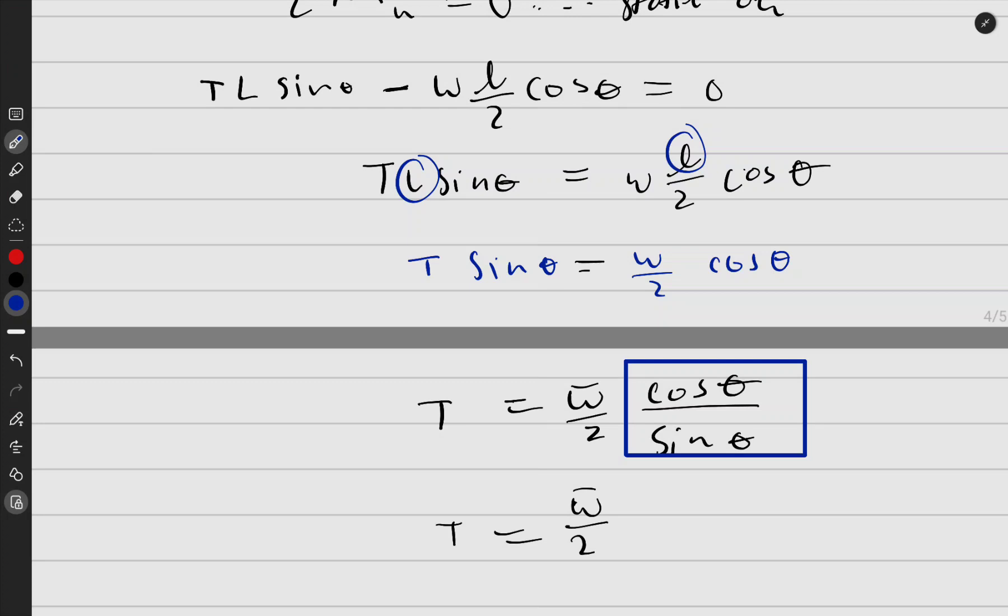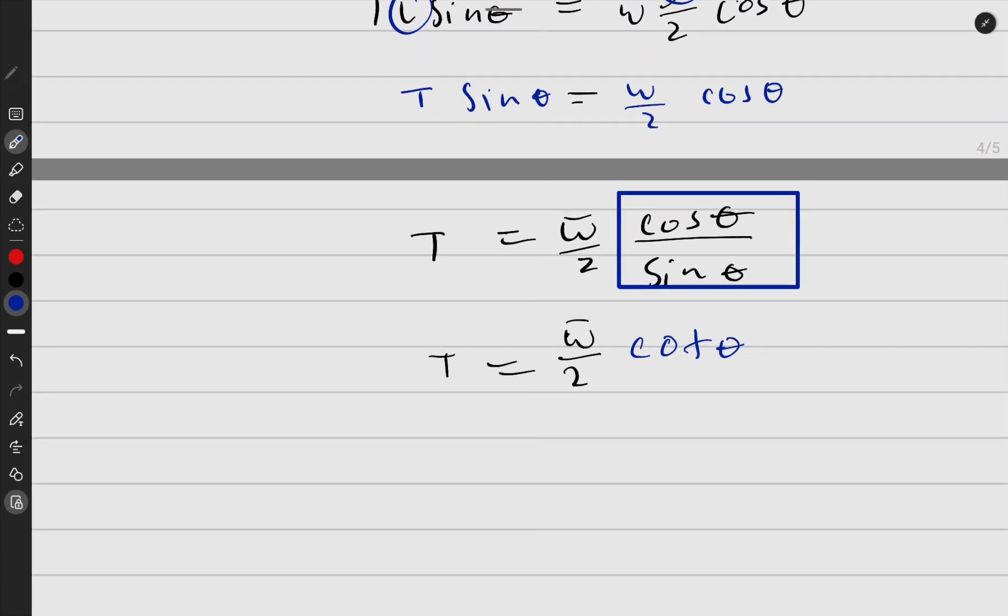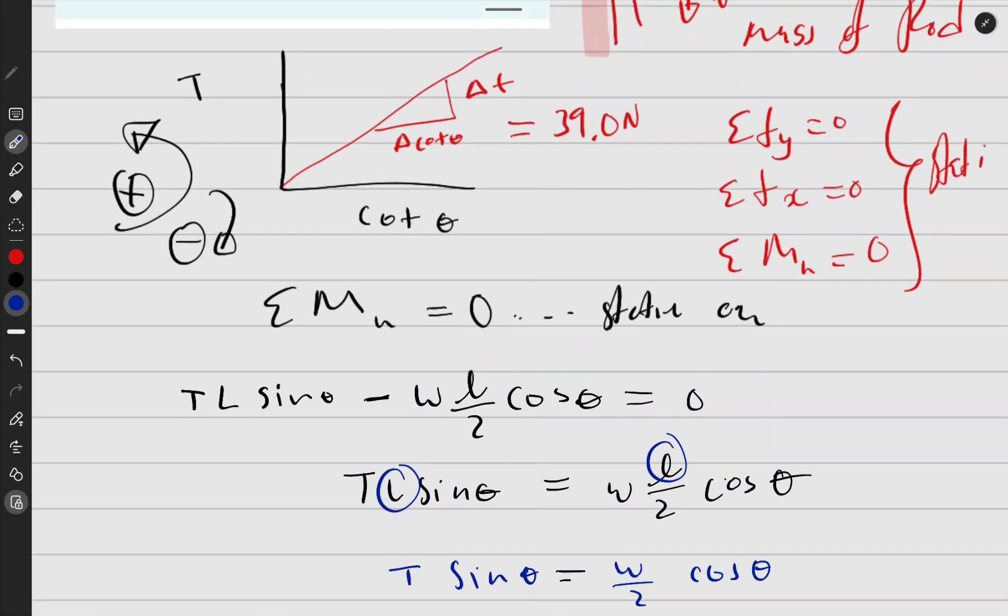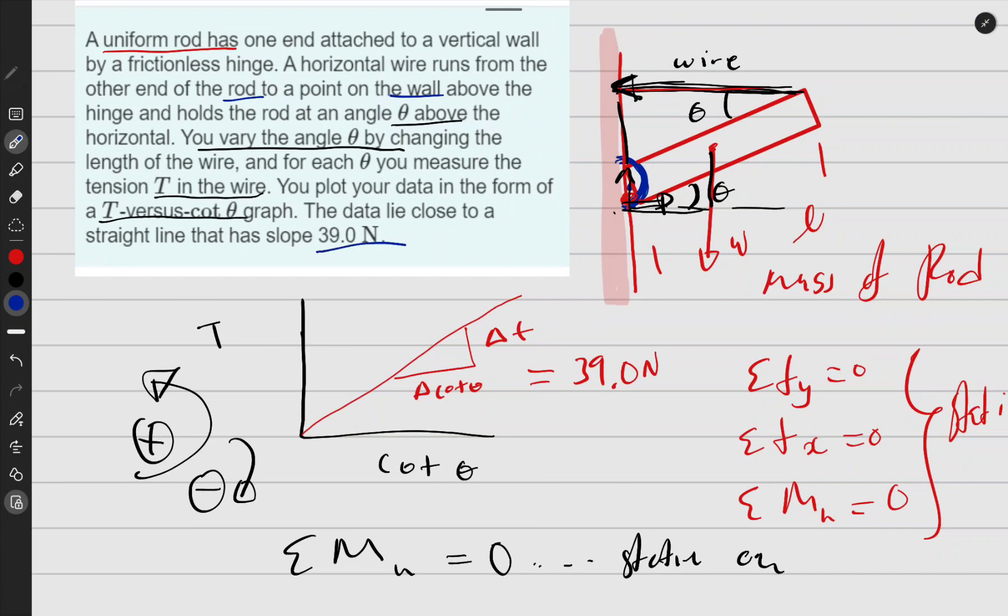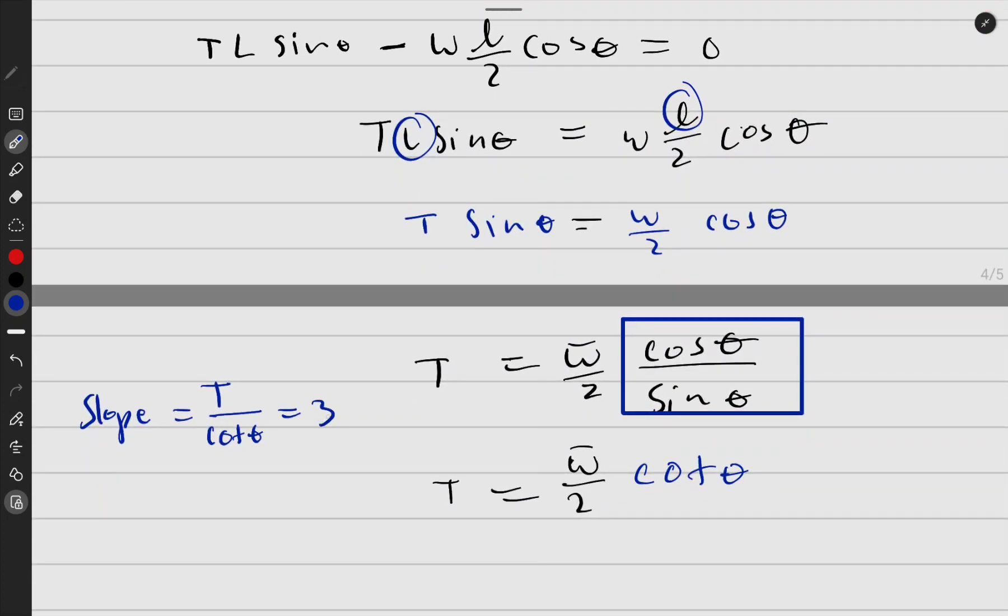Okay, but on the problem we were given the gradient or the slope. Let me just say slope—the slope of T, or the slope of T versus cot theta was equal to—they really gave us that number—was equal to this 39.